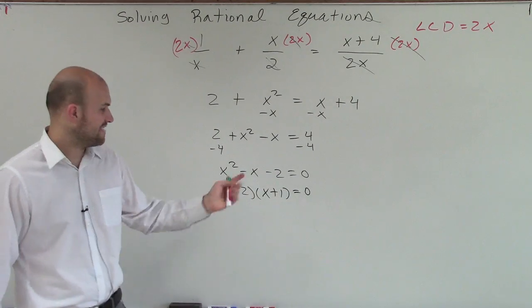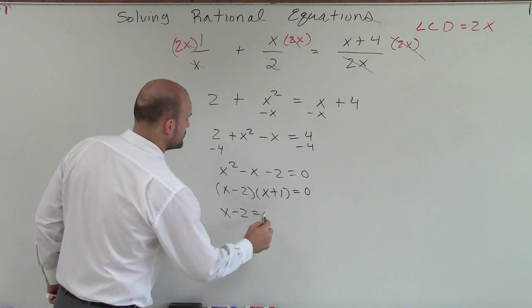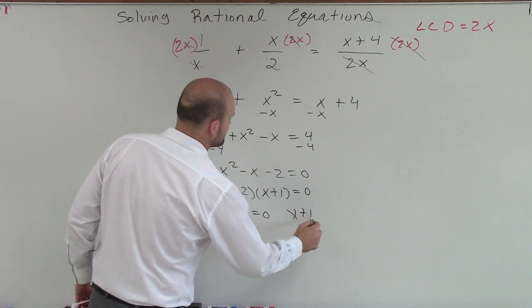And now that I have a product equal to 0, I can apply the 0 product property, which says x minus 2 equal to 0, or x plus 1 equals 0.